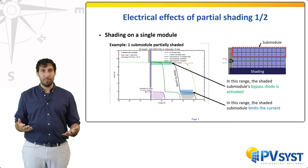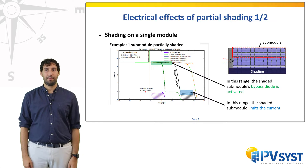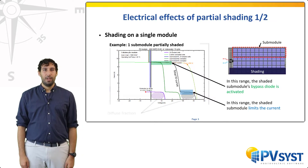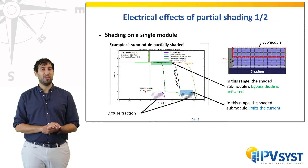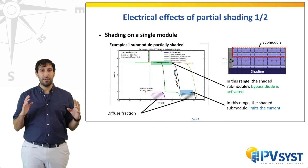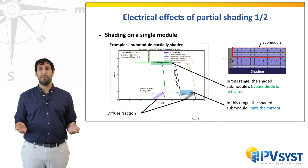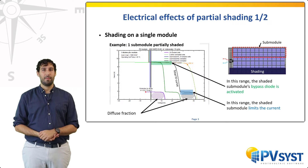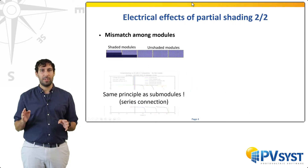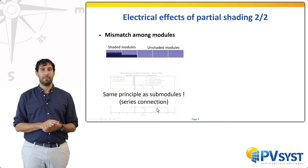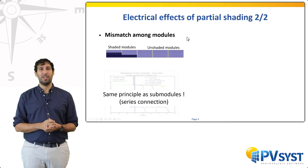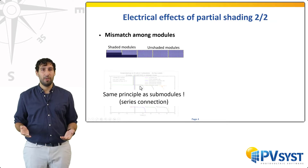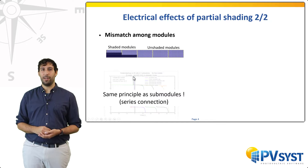This is a first type of mismatch loss. Once we connect multiple modules together into strings and inverter circuits, other types of mismatch can arise. If the shadings are inhomogeneous among modules of the same string, there will be a certain mismatch between modules. The behavior is, however, basically the same as with sub-modules — after all, you still only have components in series.